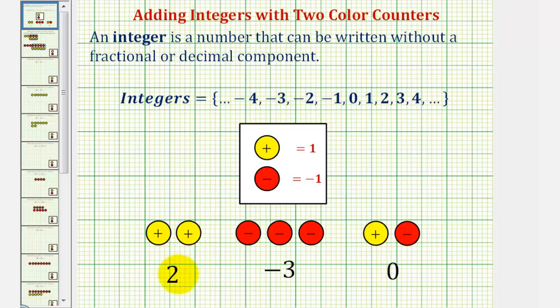One way to model positive two would be to use two yellow counters. One way to model negative three would be to use three red counters. And if we were to combine a yellow counter with a red counter, the result would be zero.